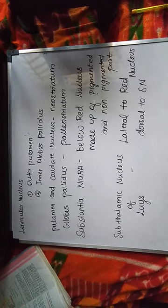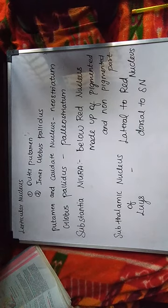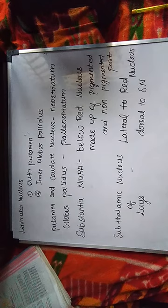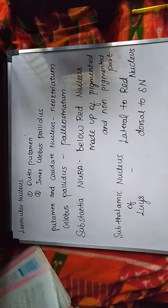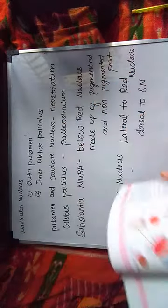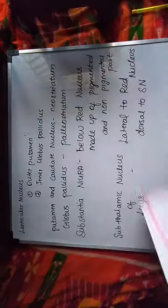The Subthalamic Nucleus of Lewis is rostral to the Substantia Nigra. So when they ask you about the connections, refer to the diagram in your book and practice drawing it. This diagram shows the afferent connections. In the two diagrams, you can see both the afferent and efferent connections covered.